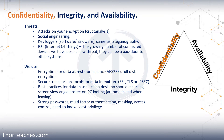That brings us to the more difficult one: data in use. It's not sitting on a server and it's not being sent — we're actively using it, meaning we cannot use encryption. So what do we do? Here it's really more about training, policies, and awareness. We might have a clean desk policy, meaning you can't have anything printed out on your desk unless you're actively using it. If you move away from your desk, you either lock it away or shred it. A printout is still data — if 500 account numbers or social security numbers get stolen, that's bad. We can also have policies on shoulder surfing, view angle protectors on screens, and PC locks that activate after a minute of inactivity.